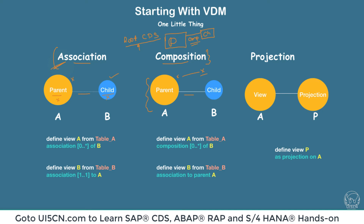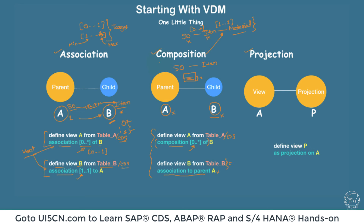So to summarize: we use composition in the root CDS because we need to create a strict parent-child relationship, and that is why you will see composition used in root CDS views. Now let's move to the projection view and understand why it is used and what it is.